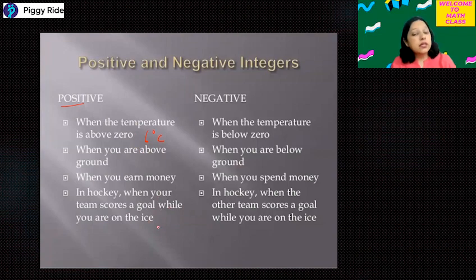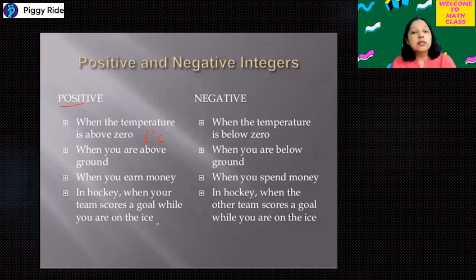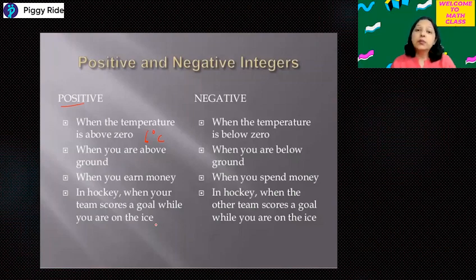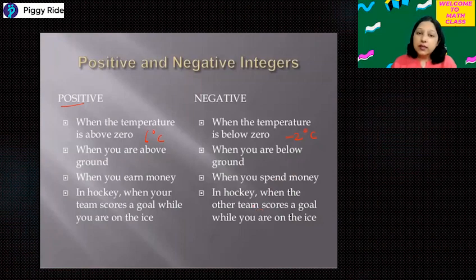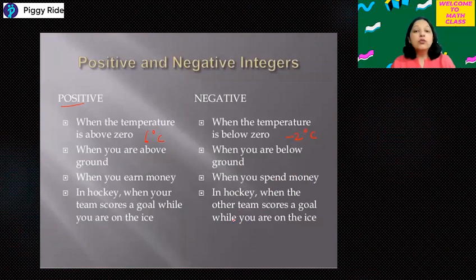For negative integers — when the temperature is below zero, you must have heard something like minus two degrees Celsius at a particular place. Or when you are below the ground, like when you go in the lift to the basement, we call that an example of a negative integer. When you spend money you are losing, and that will also be a case of a negative integer.